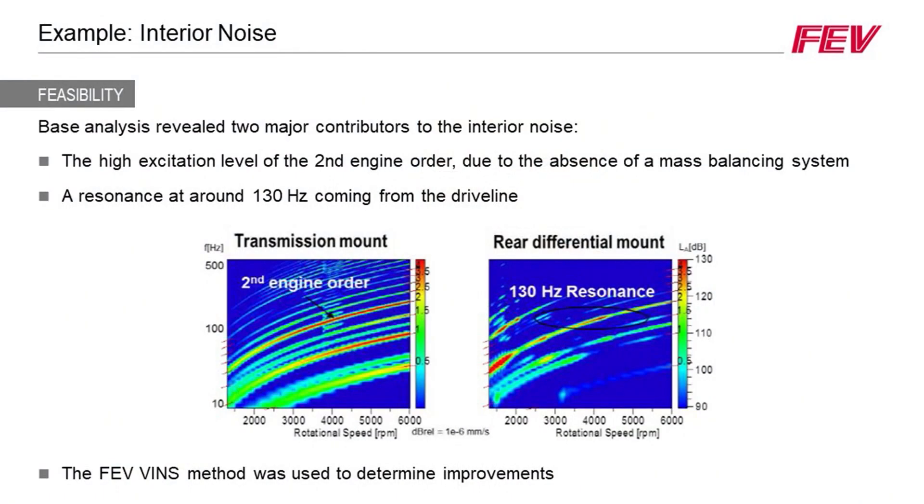The base analysis revealed two major contributions to vehicle interior noise. The first was high excitations at a number of different engine orders, especially the second engine order for the vehicle in question, due to the lack of a mass balancing system in the engine. The second was resonance at a certain frequency coming from the driveline. We achieved very good correlation between simulation and measurements, and this was also published as a technical paper.